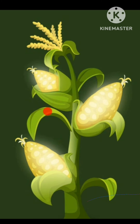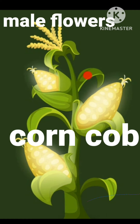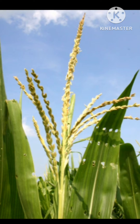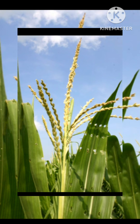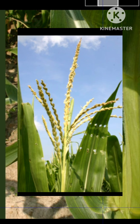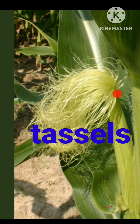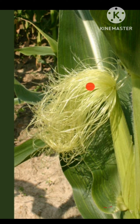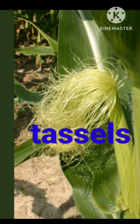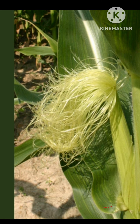In corn cob, the tassels that you see are nothing but stigma and style, which wave in the wind in order to trap the pollen grains. Here we can see the male flowers of the maize plant — they are situated at the apex, and below that, laterally, you can see the female flowers. The female flowers have the stigma and style exposed to trap the pollen grains that fall off from the well-exposed stamens of the male flowers.